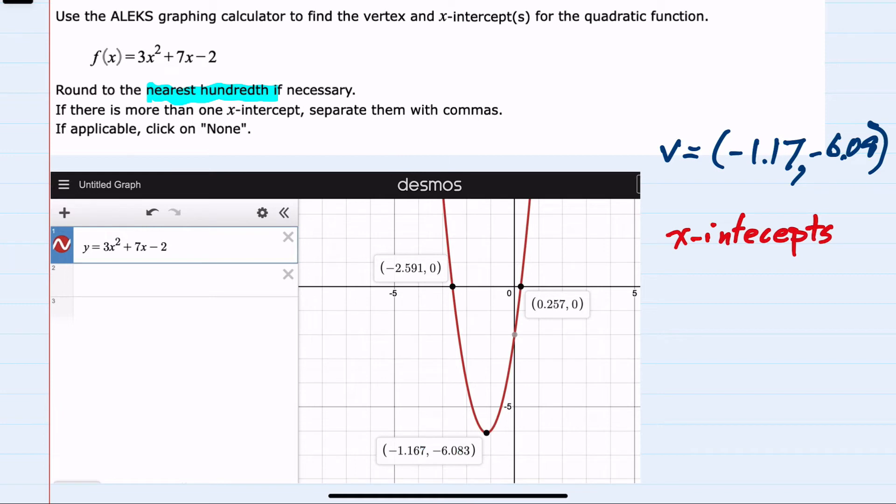And then for the x-intercepts, again I've clicked where the graph crosses the x-axis. So we have two intercepts rounding to the hundredths place. In each of these, our first x-intercept would be -2.59. The 9 is followed by a 1, so it would stay the same in the hundredths place.